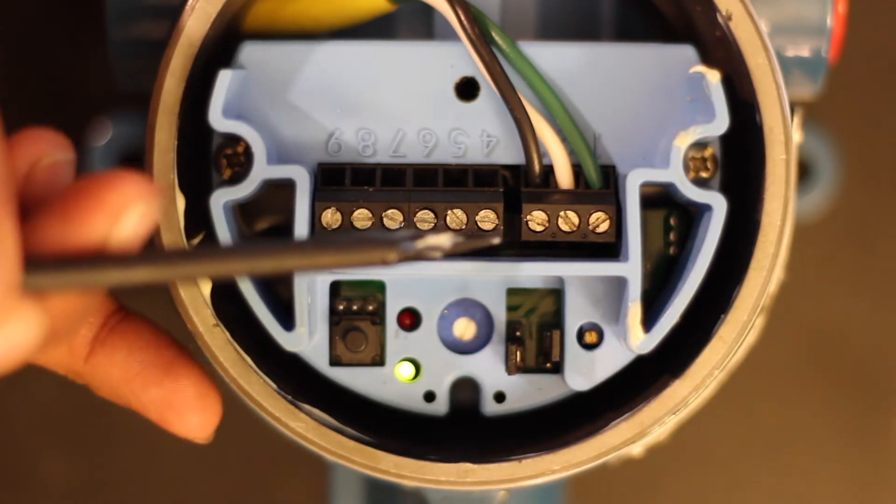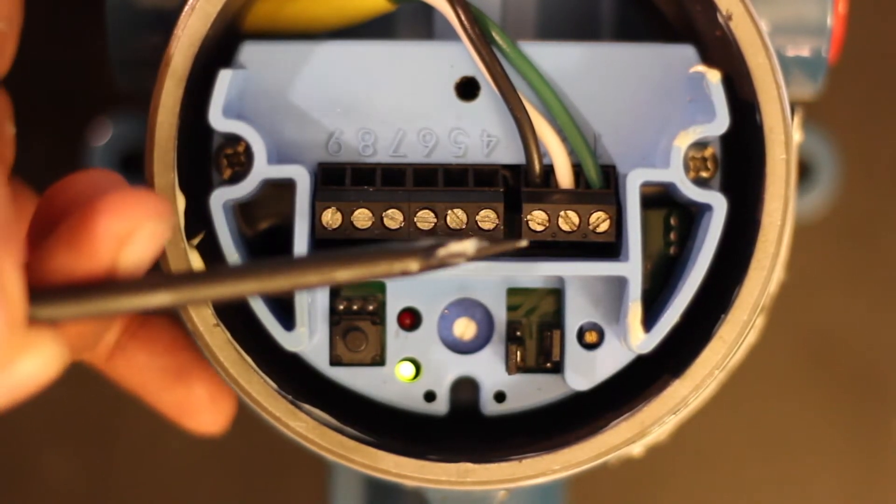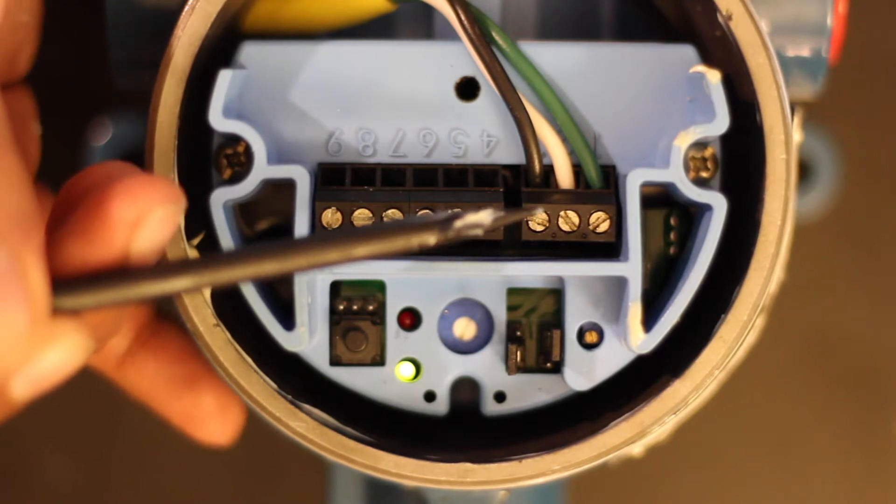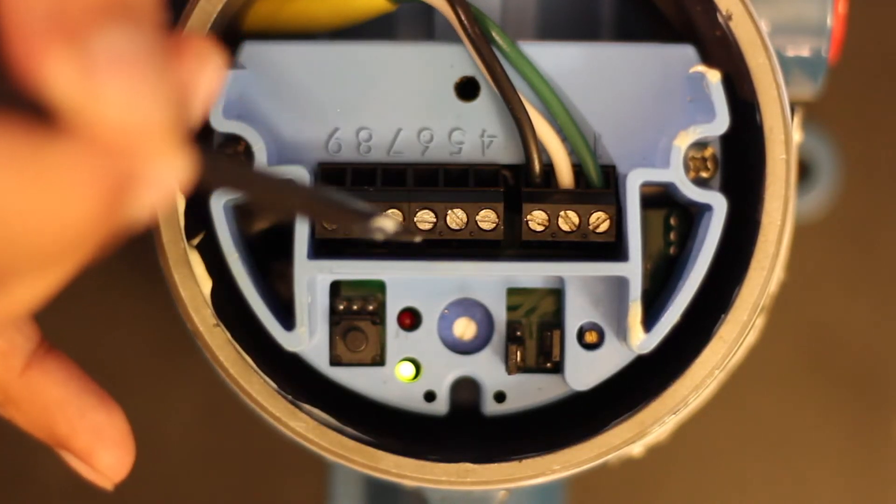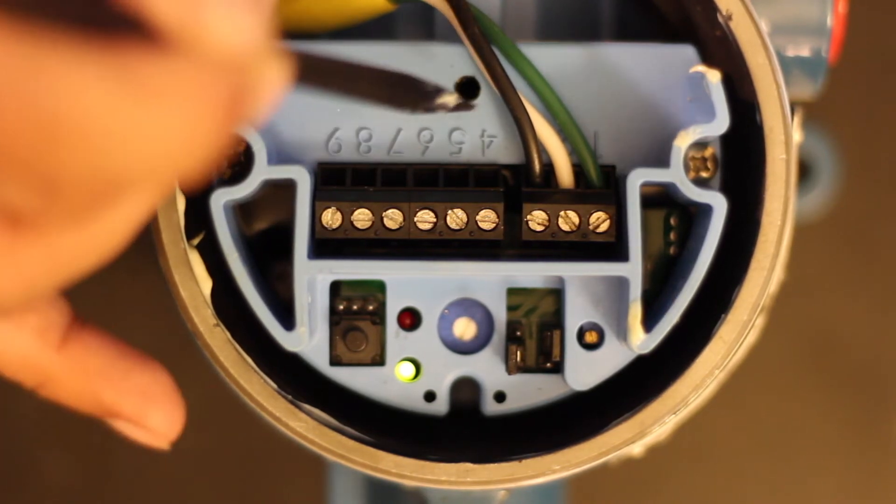You have your universal power supply connections. This particular unit will take in 24 volt DC, 120 volt or 220 volts AC. You have your double pole double throw relay connections from 4 through 9.